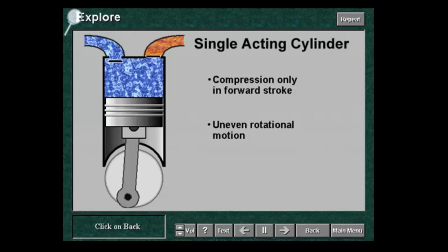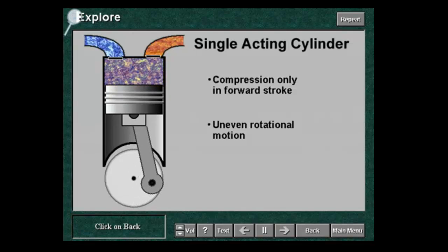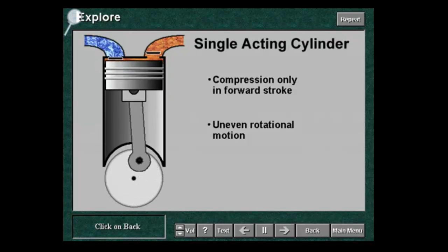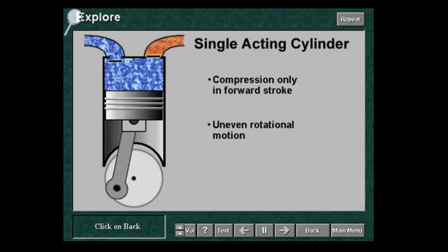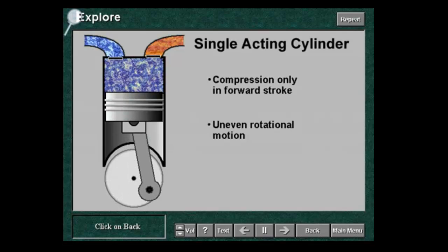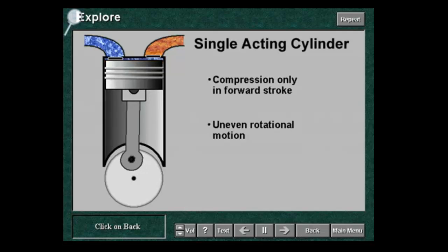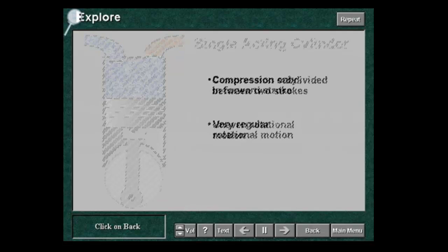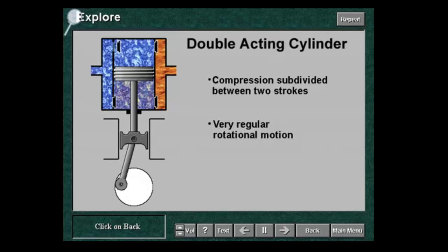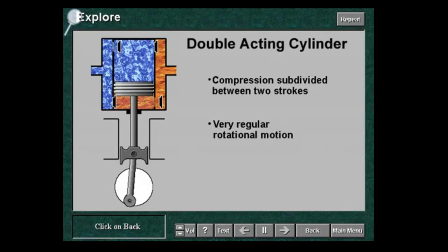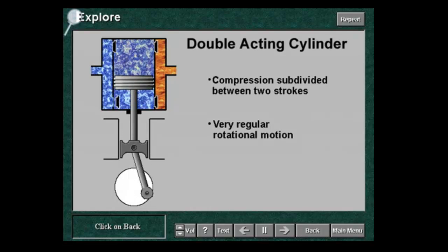Compression occurs only in the forward stroke. Subdividing the compression work between the two strokes of the crank revolution results in more regular rotational motion for double-acting cylinders.